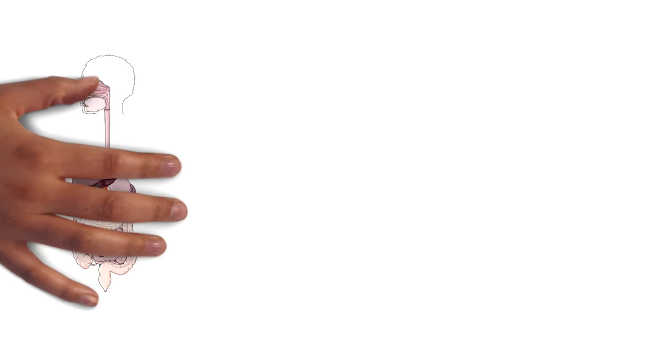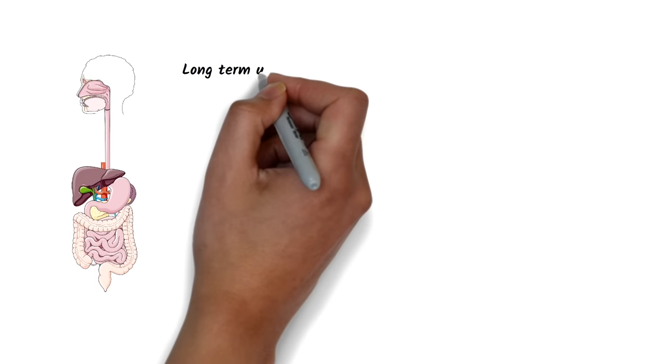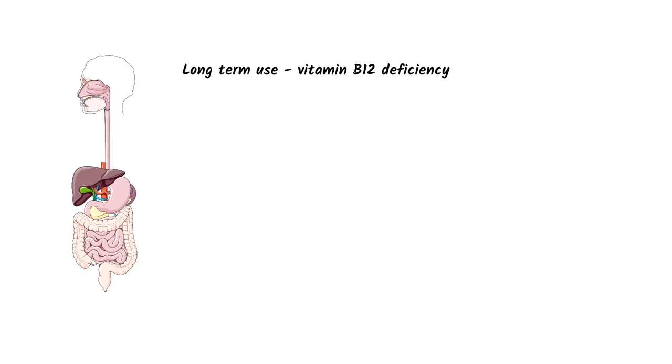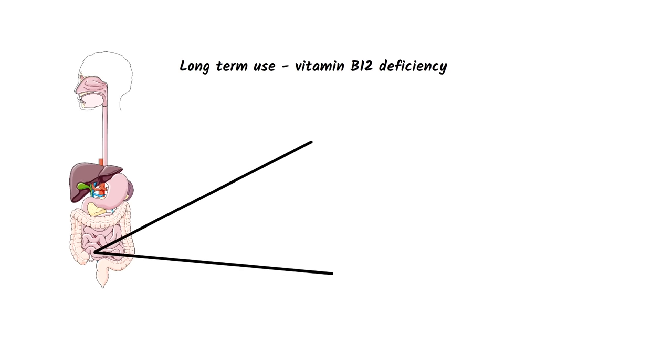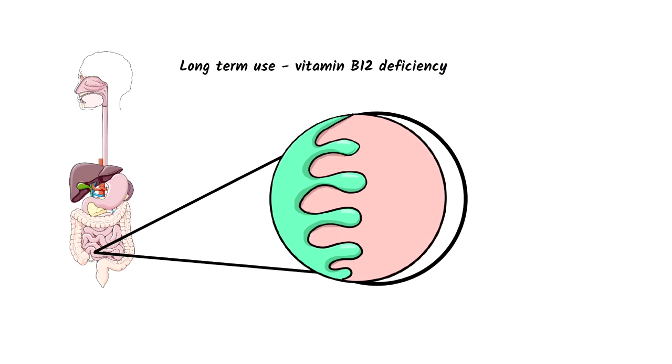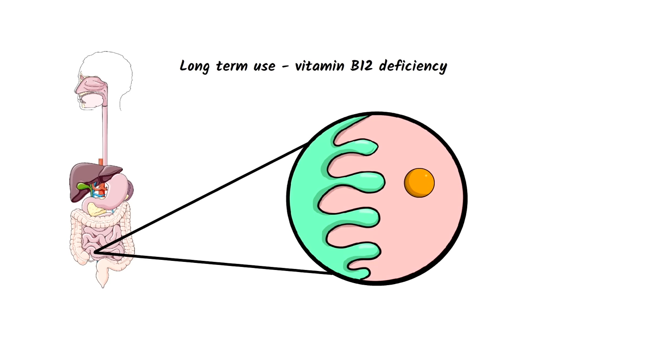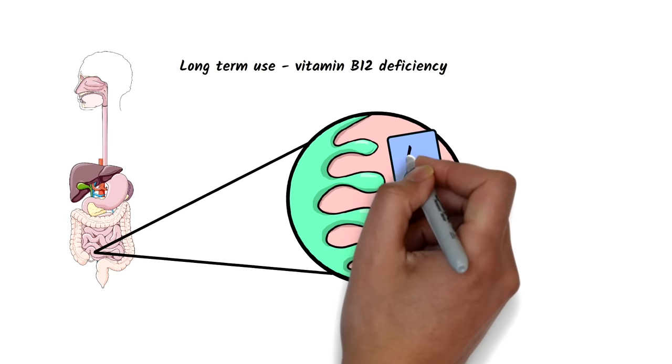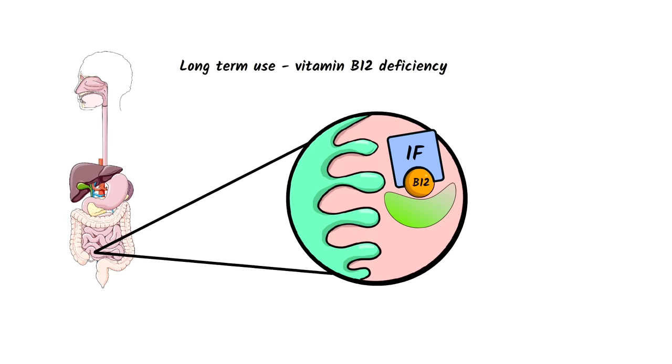Long-term use of metformin can cause vitamin B12 deficiency. Metformin interferes with the calcium-dependent absorption of vitamin B12 intrinsic factor complex in the terminal ileum. Vitamin B12 deficiency can occur after many years of metformin use.